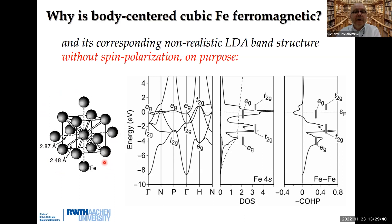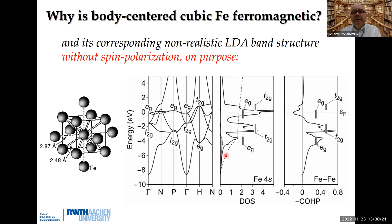This is the body-centered cubic structure of iron. We do a calculation without spin polarization on purpose, even with the simplest functional. We deliberately introduce an error at the very beginning and want to see when this mistake shows up. This is the band structure — the 4s band here, and the five 3d bands going up and down, characterized according to T2g and Eg representations. This gives the characteristic three-peaked density of states of a body-centered cubic metal. For the chemical bonding by COHP, everything is nicely bonding — bonding, bonding, bonding. But then you have an antibonding level at the Fermi level in non-spin-polarized BCC iron.